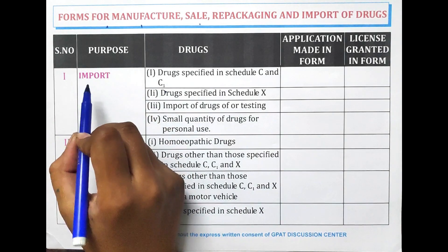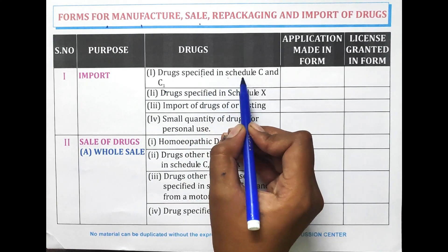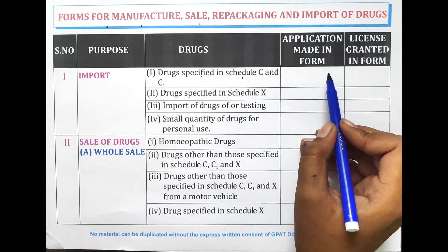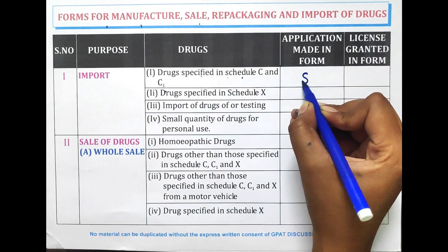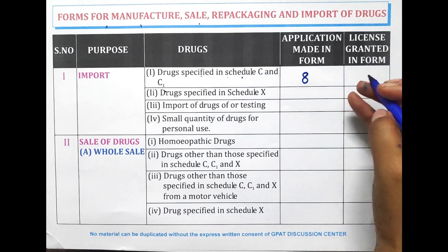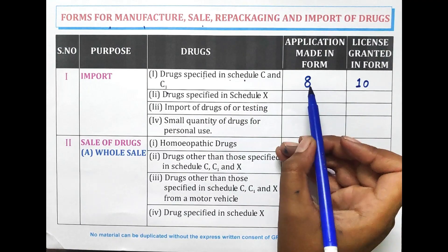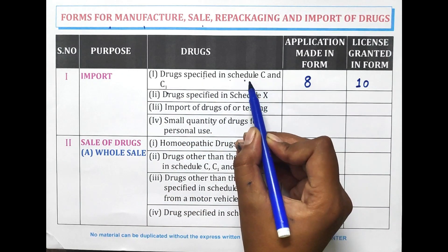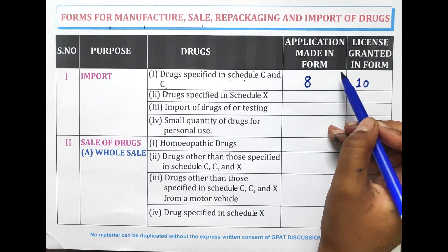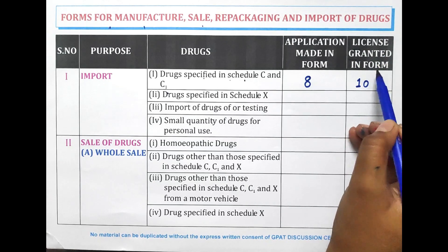First one is the import. When we have to import the drug specified in Schedule C and C1, the application is filed in Form 8 and the license is granted in Form 10.